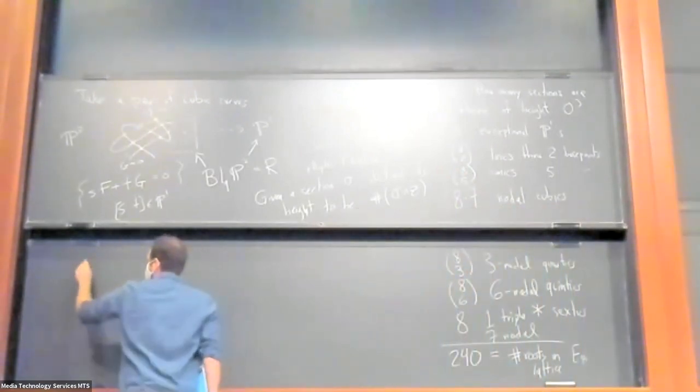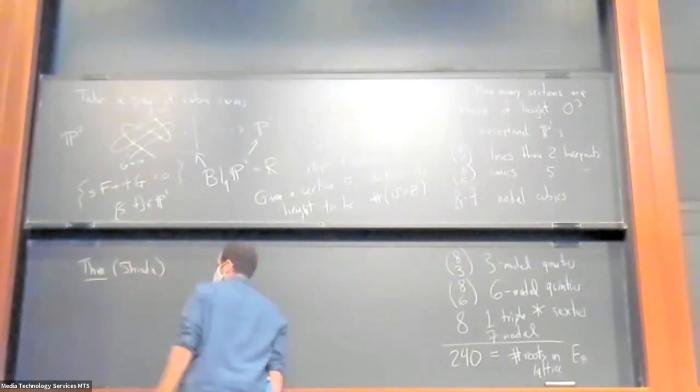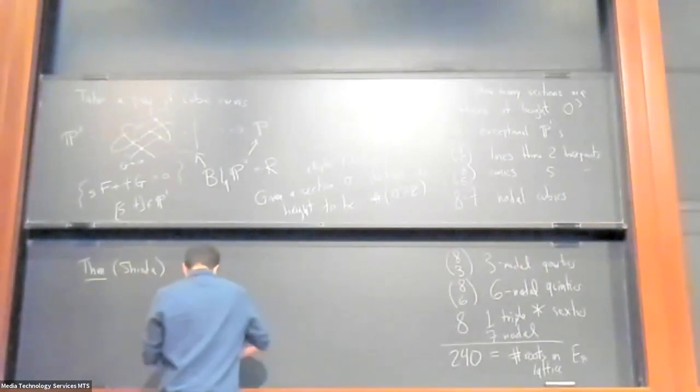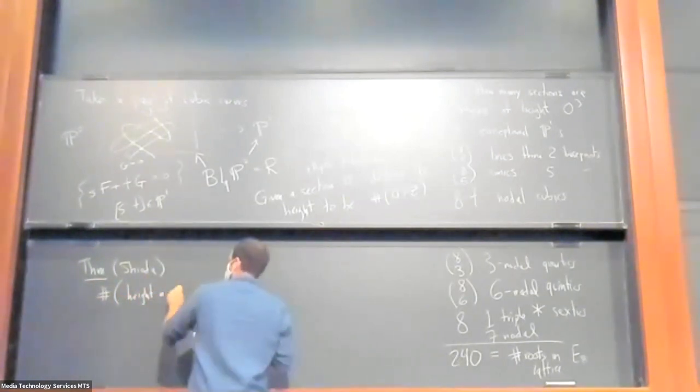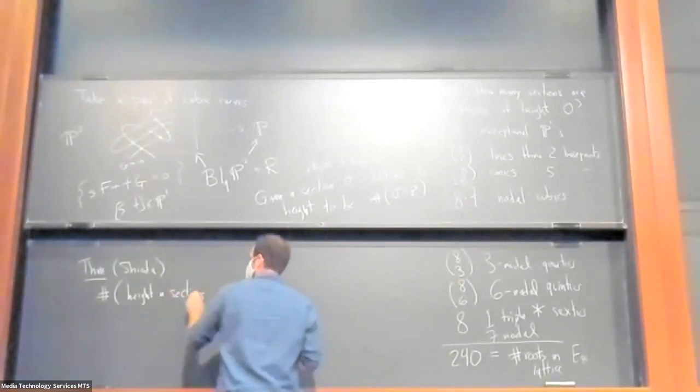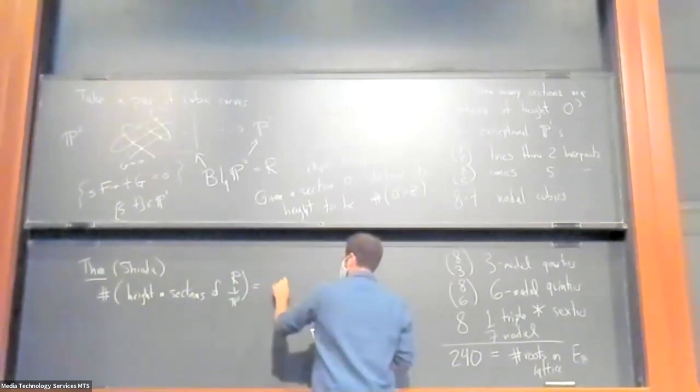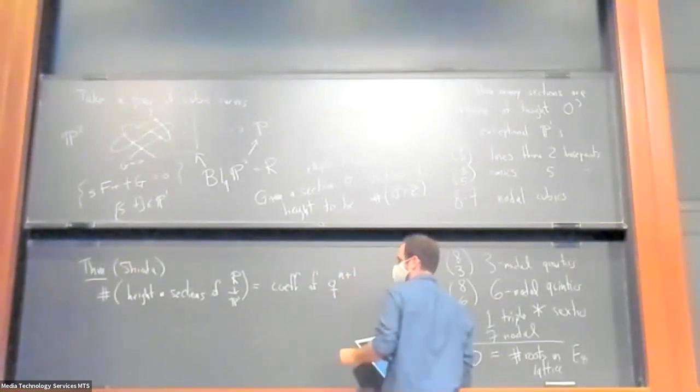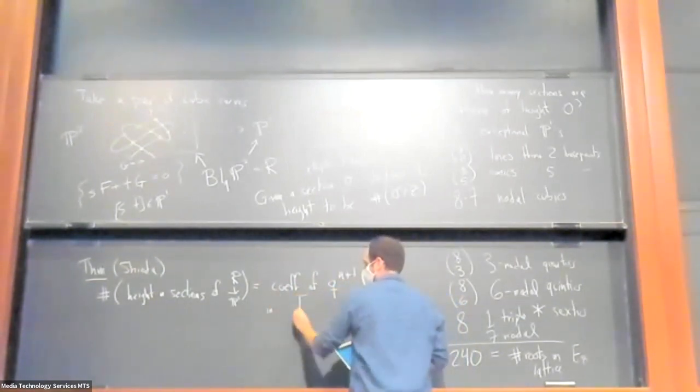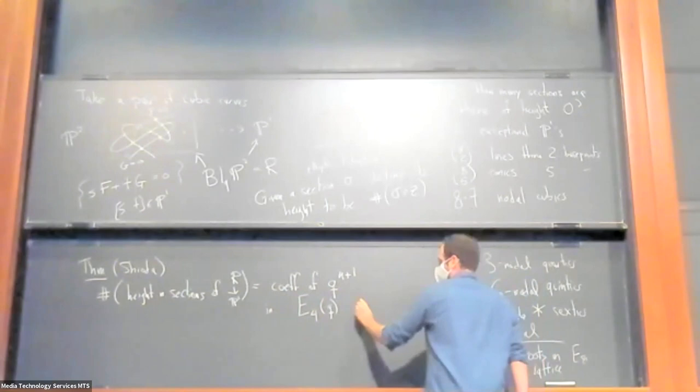So this is kind of the first step in the story. And I think maybe I just showed earlier that the number of sections that we give in height of this fibration R over P1 is the coefficient of D to the n plus one in the theta function of E8 plus one times E4. So this is a weight 4 modular form.